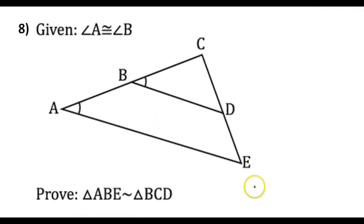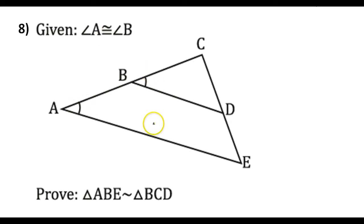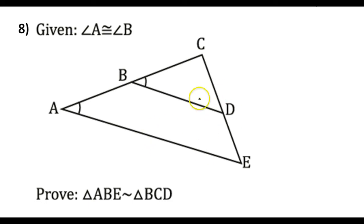Let's do one more before we end this video. Again, I like to think through how I'm going to prove that two triangles are similar before I actually do it. We're given one pair of angles, so we're halfway to angle-angle similarity again. All we need is one more pair of angles. Notice that we do not know that these two sides are parallel, so we can't do corresponding angles or anything like that.